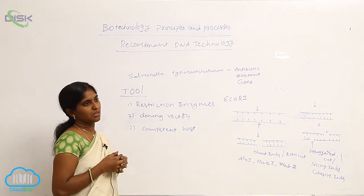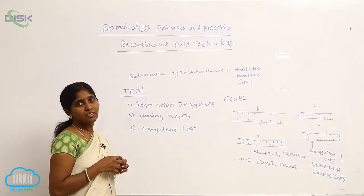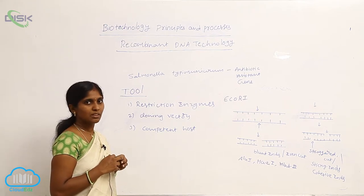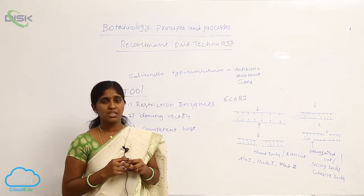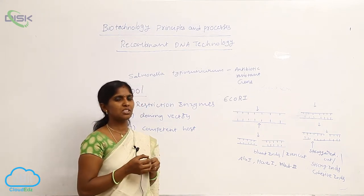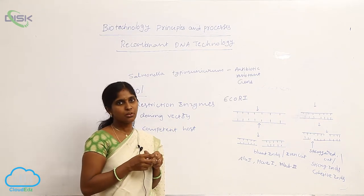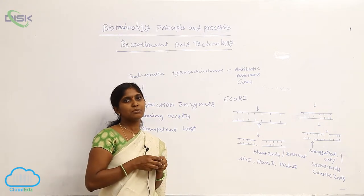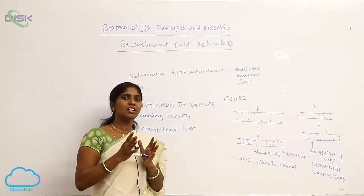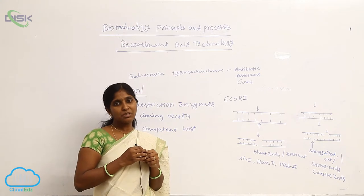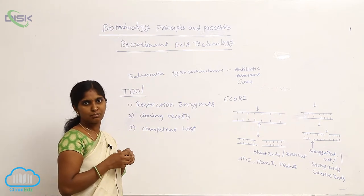Restriction enzymes recognize a site on the DNA strand called the recognition site or restriction site. They make the cut at the restriction site, and some restriction enzymes can also work at positions other than the restriction site. The ultimate goal of restriction enzymes is making fragments — long or linear DNA is cut into pieces, which is fragmentation at the molecular level.